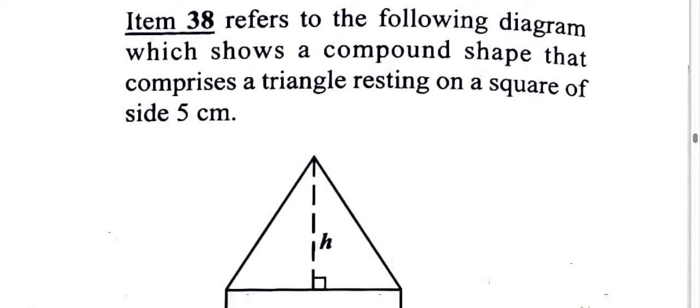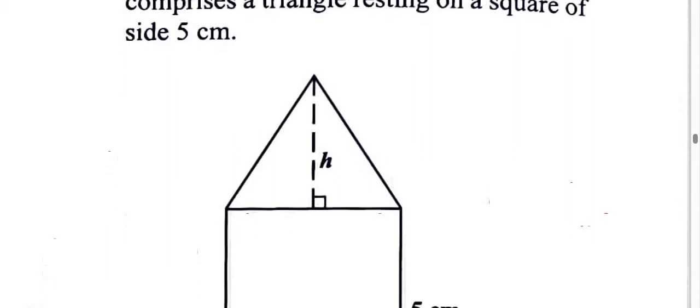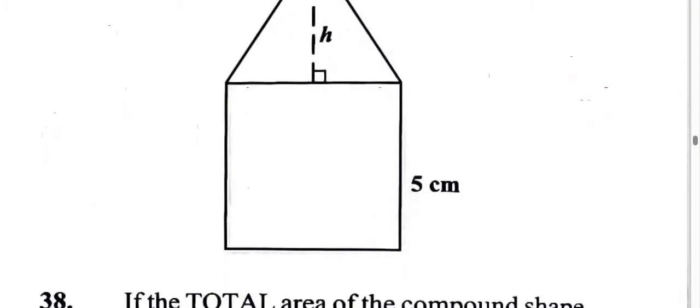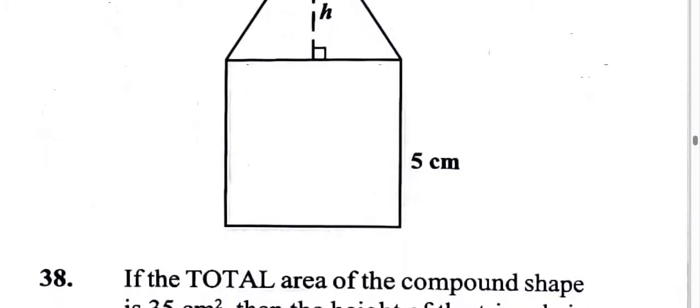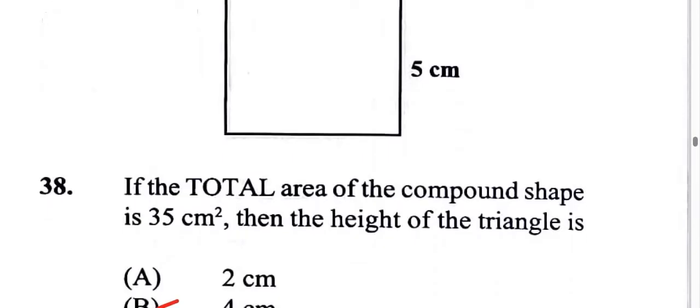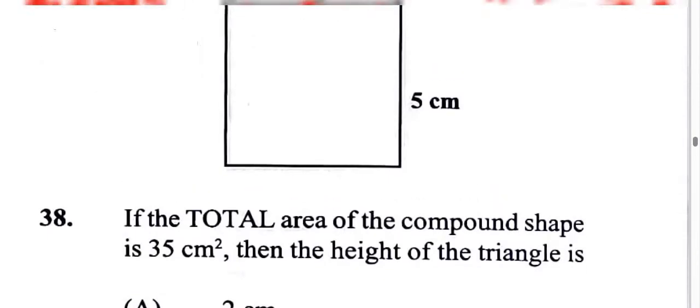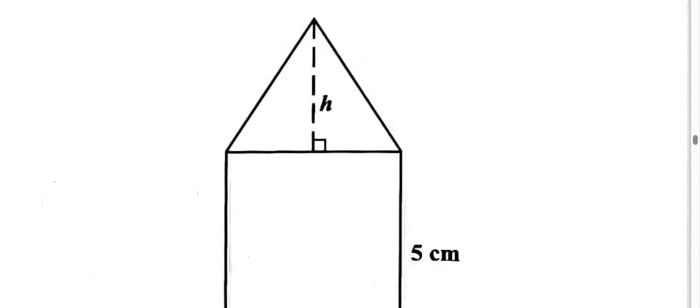Alright, so for this question we're told that we have a triangle resting on a square and the side of the square is 5 centimeters and the total area of the compound shape is 35 centimeters squared. When you combine the area of the triangle and the area of the square we get 35.